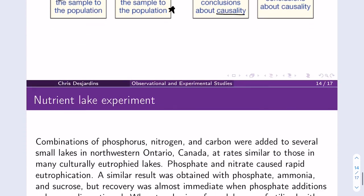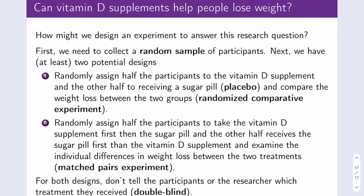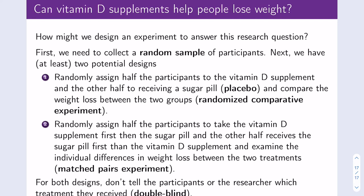Let's do one more example. Can vitamin D supplements help people lose weight? How might we design an experiment to answer this research question? First, we should collect a random sample of participants so that we can generalize to our population. Then we might randomly assign half of the participants to take vitamin D.